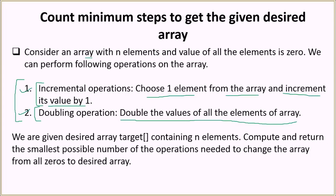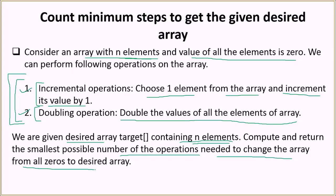You will be given an array with n elements where the value of all elements is zero. You can perform these two operations on that array and you have to reach the desired array which also contains n elements. You have to compute and return the smallest possible number of operations needed to change the array from all zeros to the desired array.